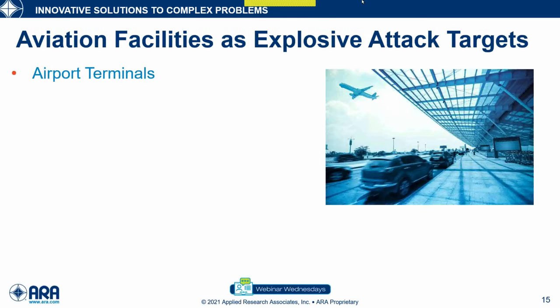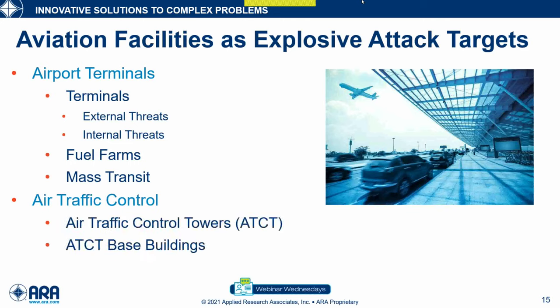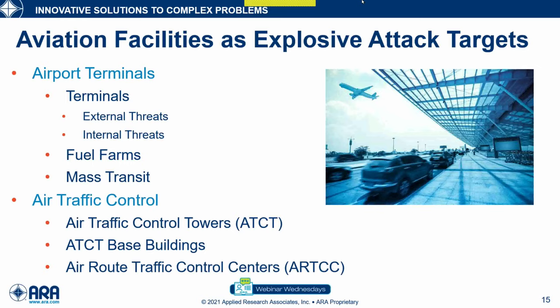Aviation facilities as explosive attack targets — the first things people think about are airport terminals. For these, we have two different types of threats: external threats located outside the terminal, and internal threats located inside. We also have fuel farms, passenger mass transit systems, and air traffic control facilities consisting of ATC towers, ATC tower base buildings, and air traffic control centers. We've worked on all of these, and they're all critical to keeping everything in operation and keeping people safe.